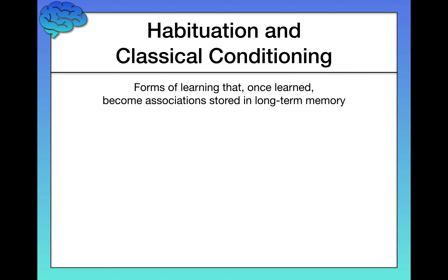Habituation and classical conditioning are forms of implicit memory. These are forms of learning which, once learned, become associations stored in long-term memory. They're implicit because you might not even know you have these associations — you might not know you've habituated, or that you've been classically conditioned to salivate at the sound of a bell, and yet that might be taking place.